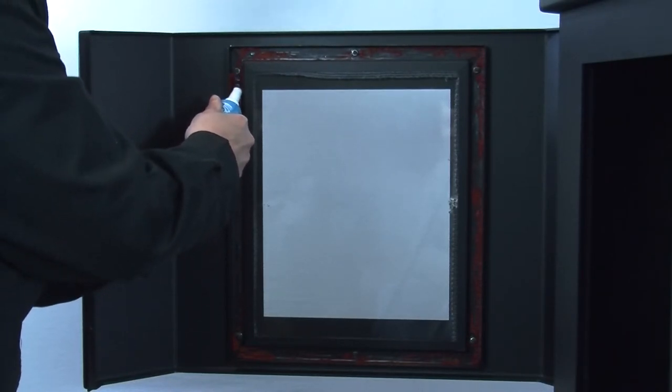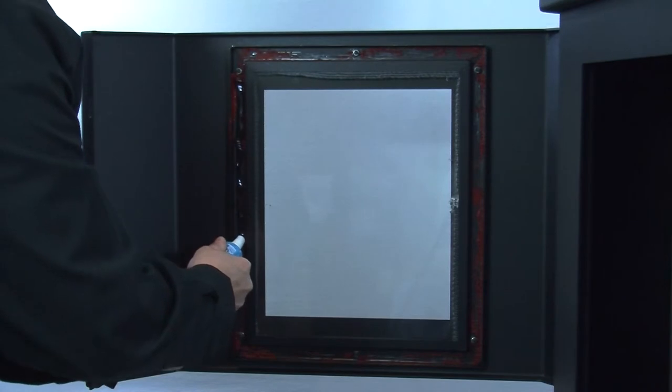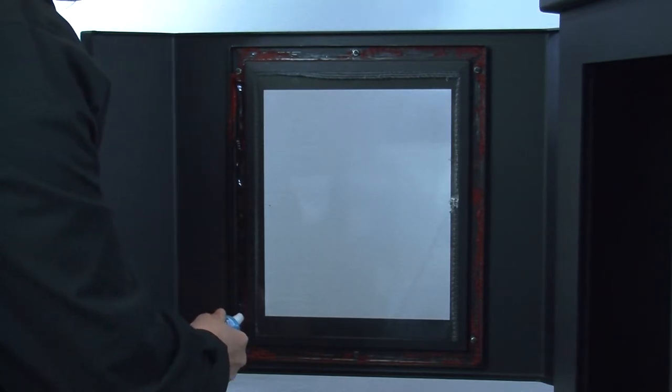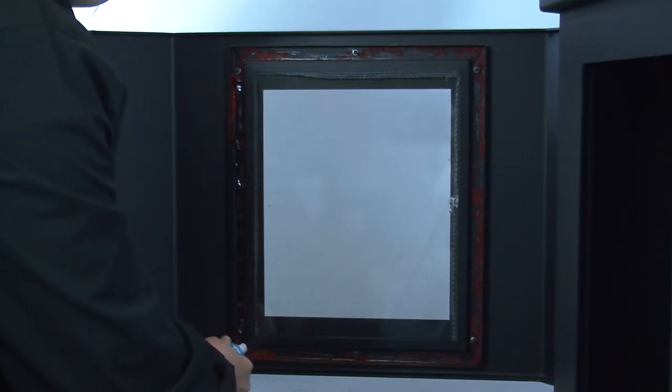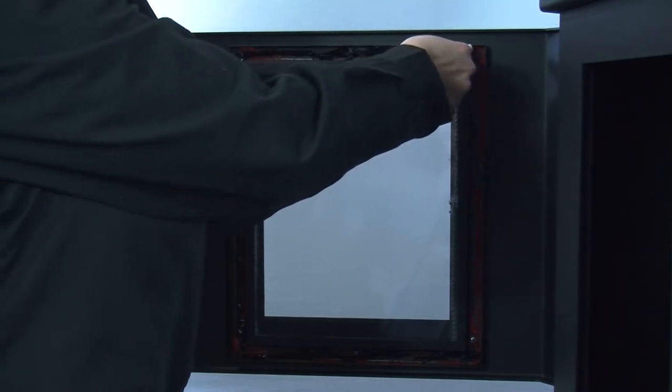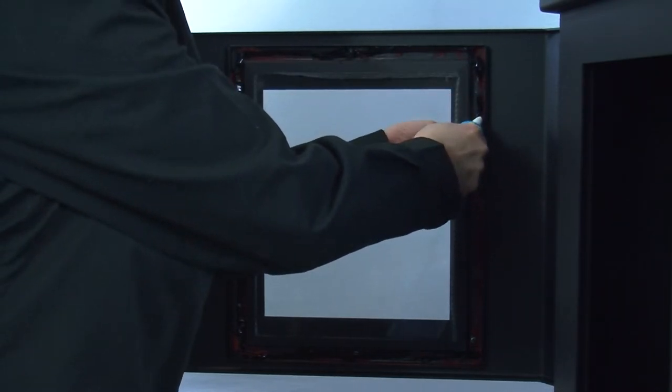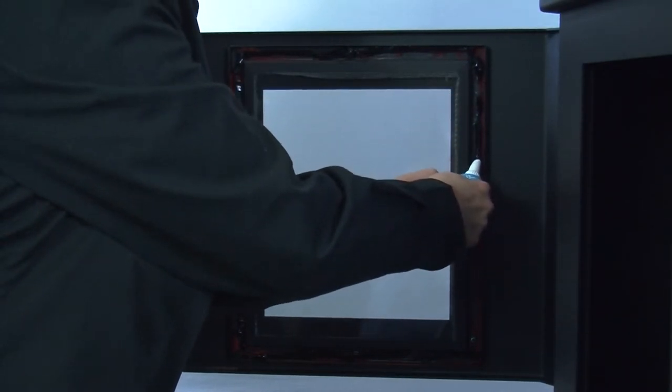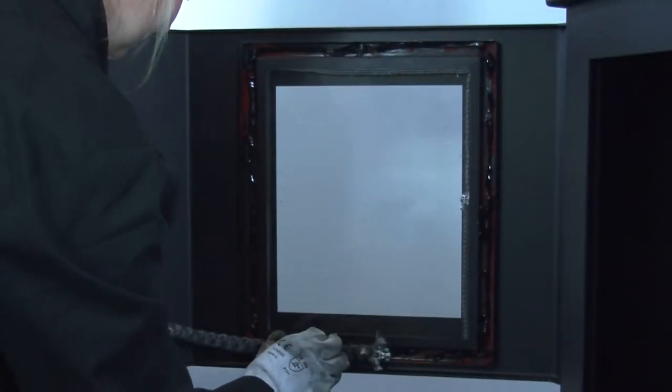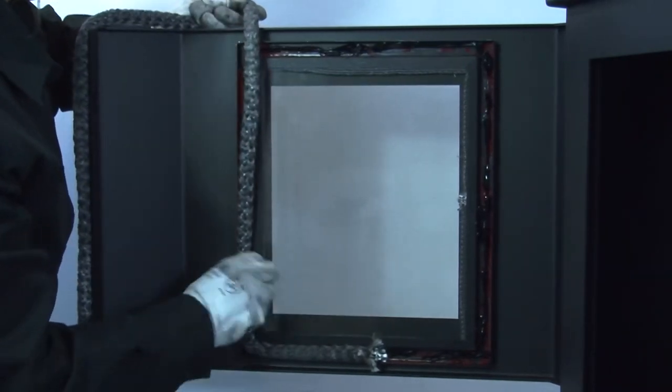Now squeeze the sealant around the groove on the door of the stove. Then press the new door gasket into the groove. You will need to start your gasket at the bottom center of the door.